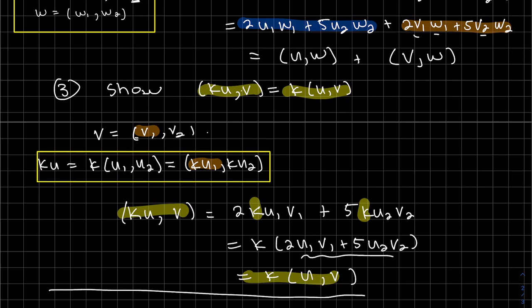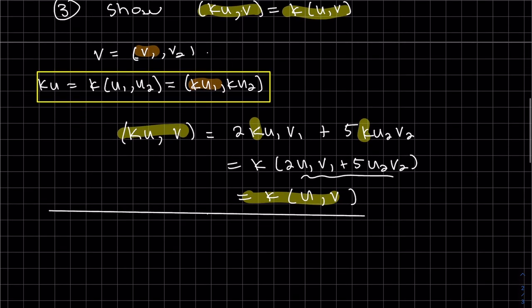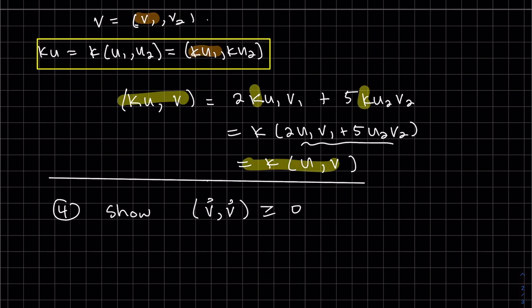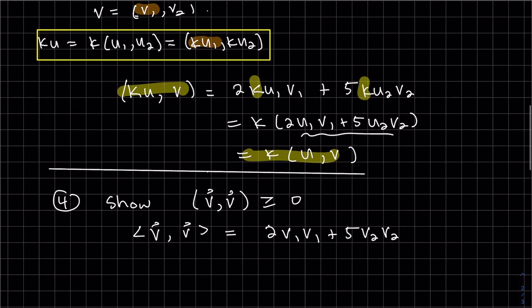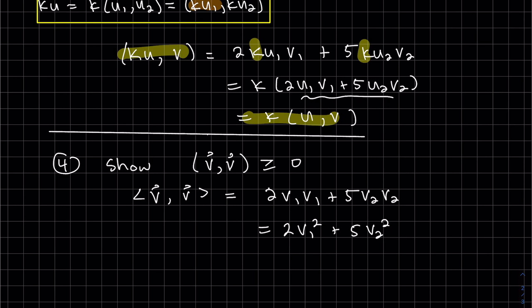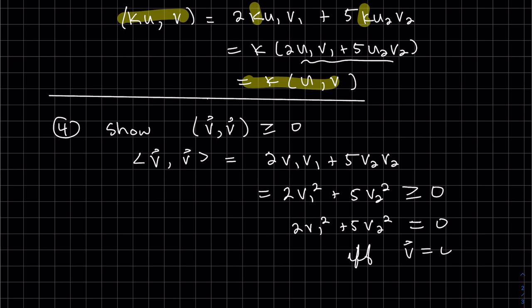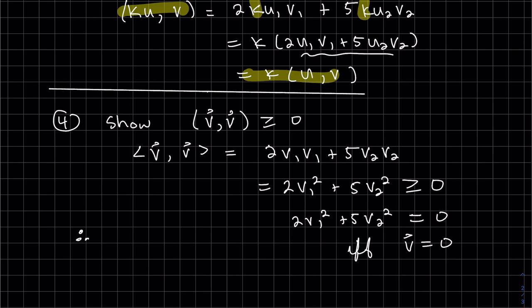And our last one. Number four. You can use parentheses or the pointy ones, it doesn't matter. So we want to show it's greater than zero. So let's write it out. Two first components, which will be the same. Five second components, which are the same. So we can square them. And since everything's positive and the square is always positive, that's greater than or equal to zero. It's equal to zero only if the vector v is equal to zero. If each of these are zero. So it does satisfy all four properties. Therefore, it is an inner product space.